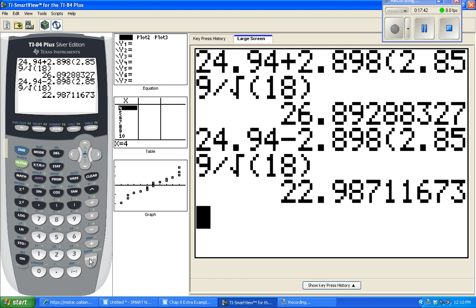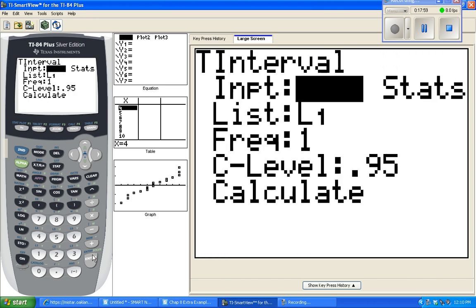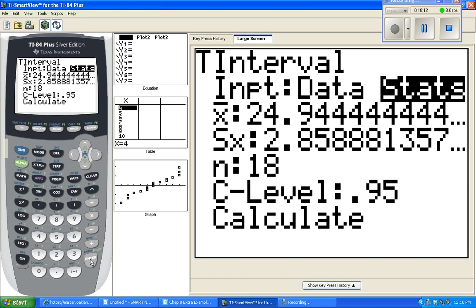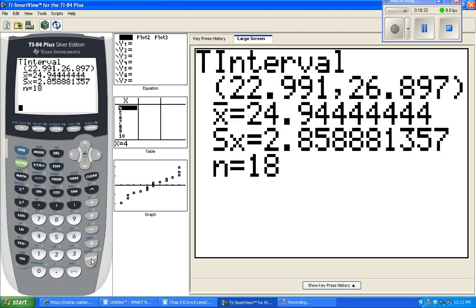The shortcut way to do this step is to go under stat, over to tests. We're doing intervals still. Tests will come up next chapter. We could do a z-interval. We didn't use z though. We used t. T-interval. Our data, we have all of the data into list one. If you didn't have the list, let's say they just gave you a mean and a sample standard deviation, you could go over to stats and type in what those values are. But let's do it as data because we already have the entire list. And this should give you the same two numbers that we got, the 22.99. So it's a little bit more exact because this did not round anything.